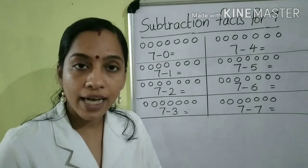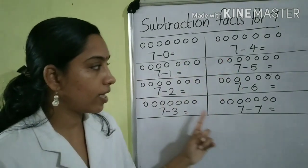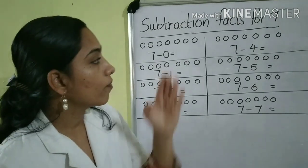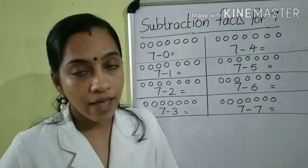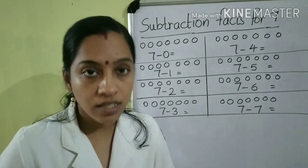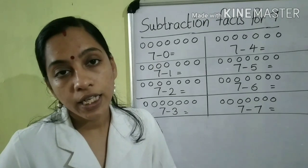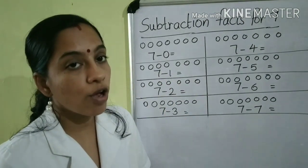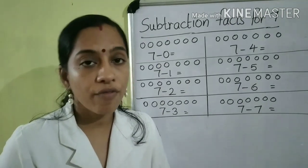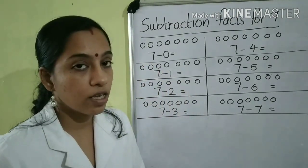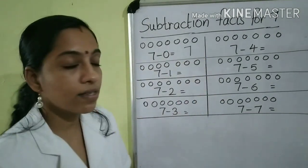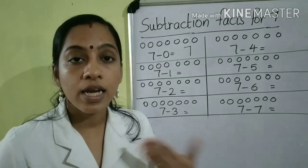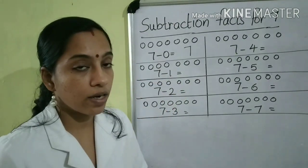Next, we will learn the subtraction facts for 7. Here you can see boxes, and in each box I have drawn 7 circles. We have to find out the subtraction facts for 7. As I told you before, for finding the subtraction facts, we have to subtract some numbers from the given number, which is 7. First, we have to subtract 0 from 7 — 7 minus 0 is 7 itself. Next, 7 minus 1 is equal to 6.